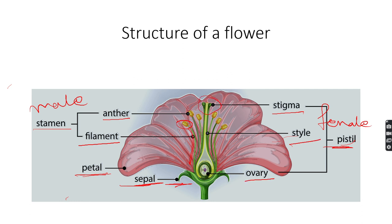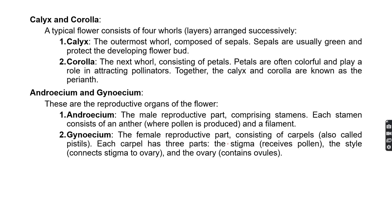The stigma is the upper or tip part of the pistil. The stalk connecting the stigma with the ovary is called the style. The base part of the pistil is called the ovary, which contains ovules. So this is the basic structure of a flower. The first terminology is calyx and the second is corolla.